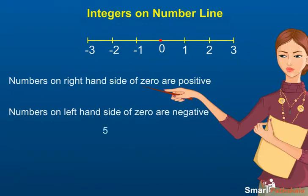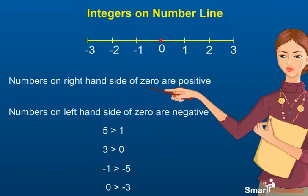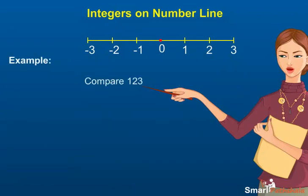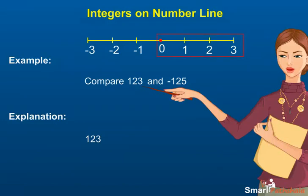We know that 5 is greater than 1 and 3 is greater than 0. So we can say that numbers that appear on the right-hand side on the number line are greater. So minus 1 is greater than minus 5, and 0 is greater than minus 3. Example: compare 123 and minus 125. Since 123 occurs on the right-hand side on the number line, 123 is greater than minus 125.